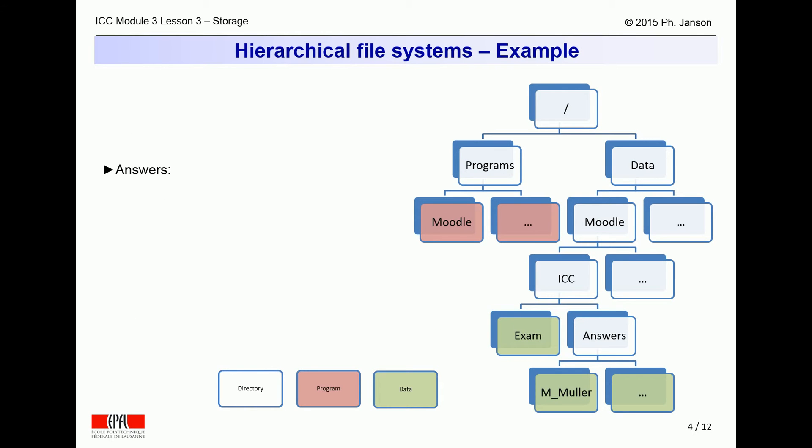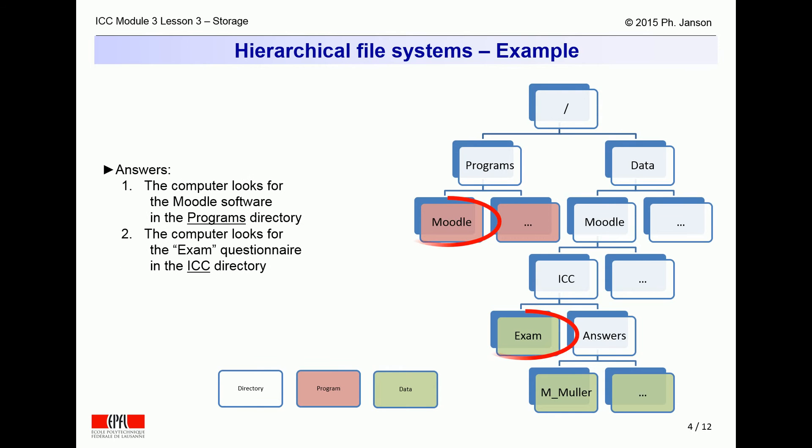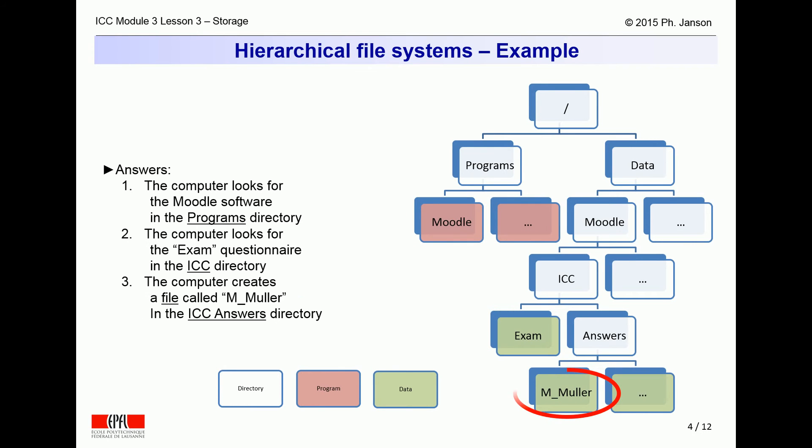The answers to those questions are as follows. The computer knows that it can find any program, such as Moodle, in the Programs directory. Moodle then knows, by convention, that it can find the ICC Exam Questionnaire in the ICC Course directory under its own Moodle directory in the computer's Data directory. And when the time comes to save Mark's answers, Moodle knows to direct the computer to do so in a file bearing Mark's name under the ICC Answers directory.